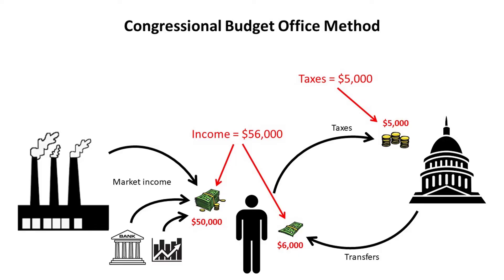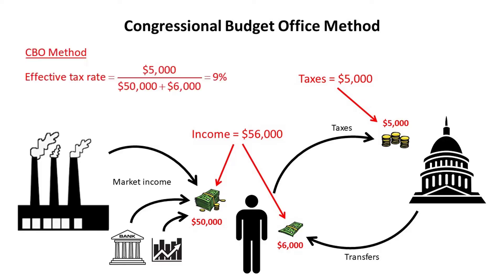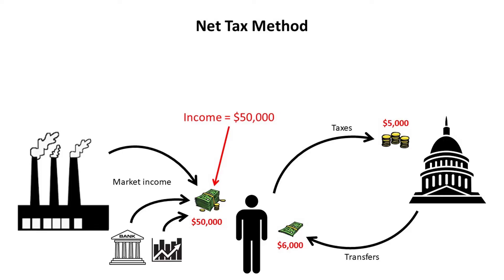The government taxed this person $5,000. So we do the math: $5,000 divided by $56,000 is 9%. According to the Congressional Budget Office, this person's effective federal tax rate is 9%. Now, the problem with this is that the calculation blurs the distinction between money a person earns as a result of market activities and money the government gives to the person.